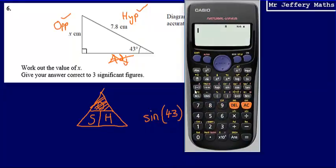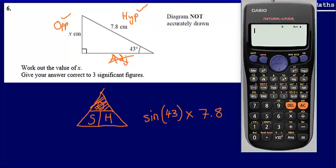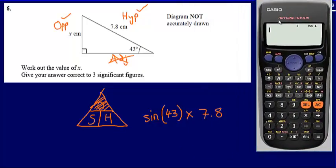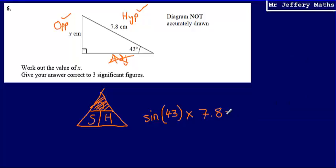Working this out on the calculator and giving our answer correct to three significant figures, this is sine 43 multiplied by 7.8. That gives me an answer of 5.32. So the final answer is 5.32 centimeters.